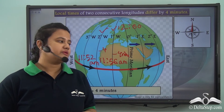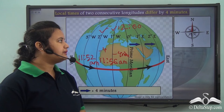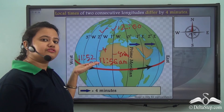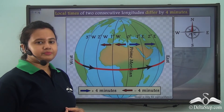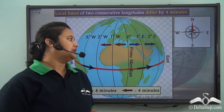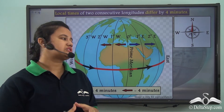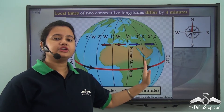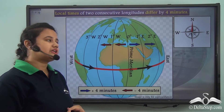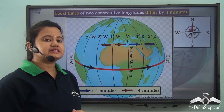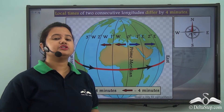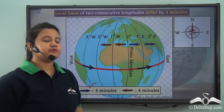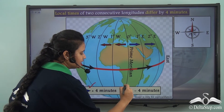So, moving east of the prime meridian means we keep adding 4 minutes. Longitudes lying to the east of prime meridian have time 4 minutes ahead of the prime meridian time. Similarly, longitudes lying to the west of prime meridian have time 4 minutes behind the prime meridian time. So if we move east we add 4 minutes, and if we move west we subtract 4 minutes.